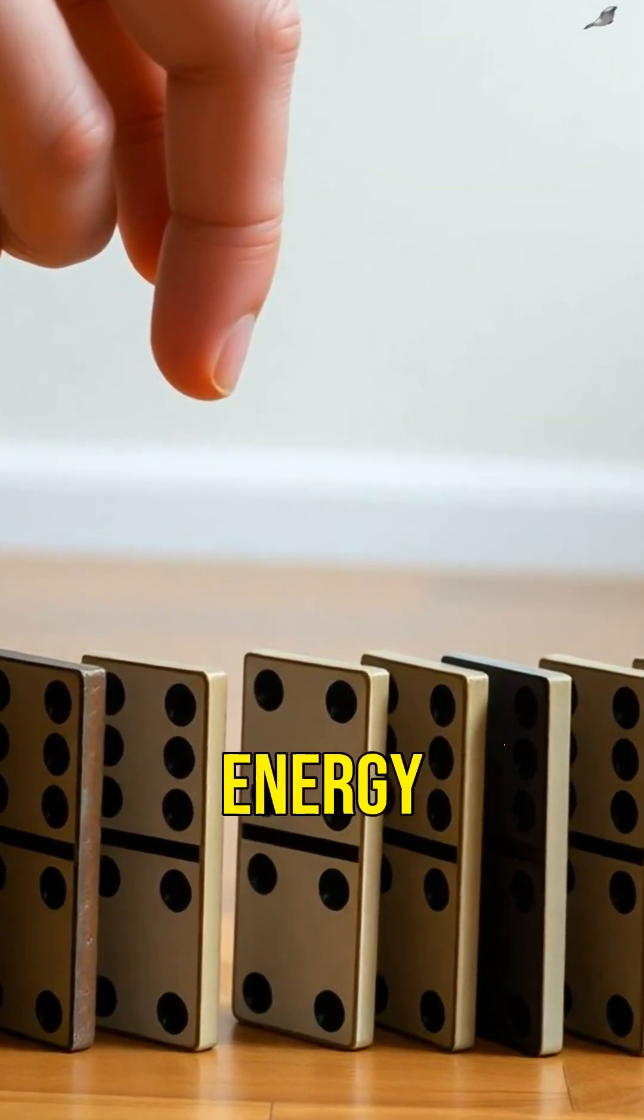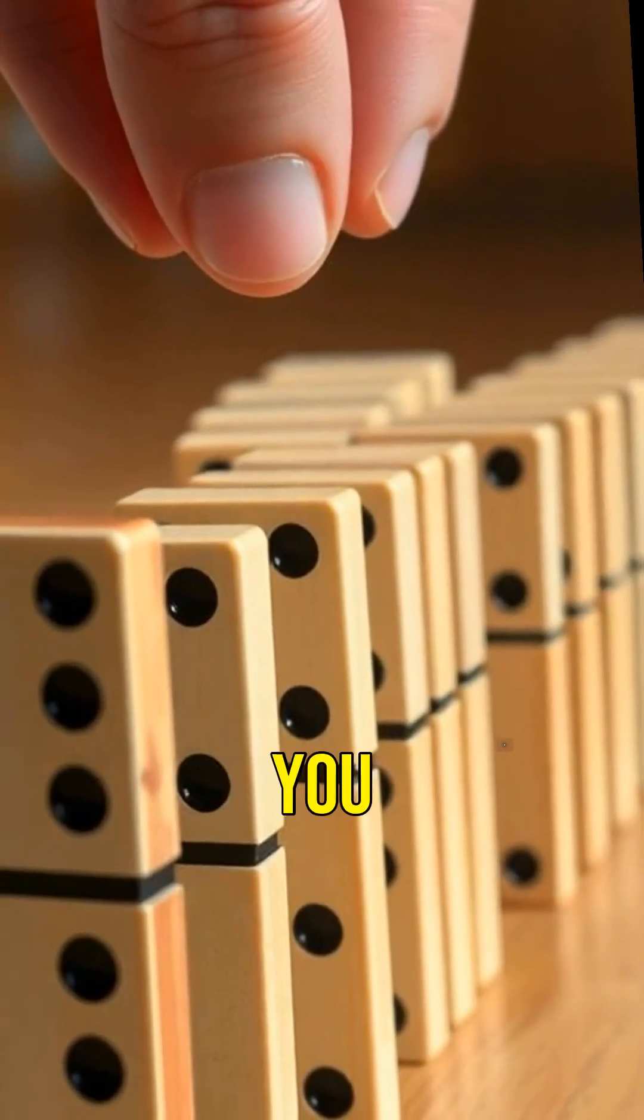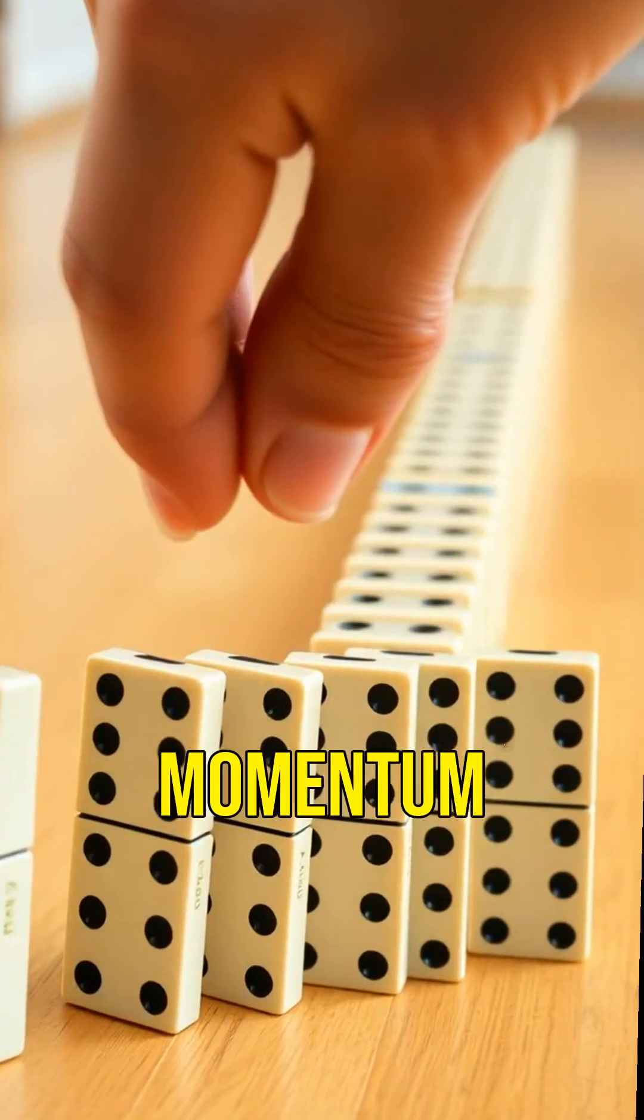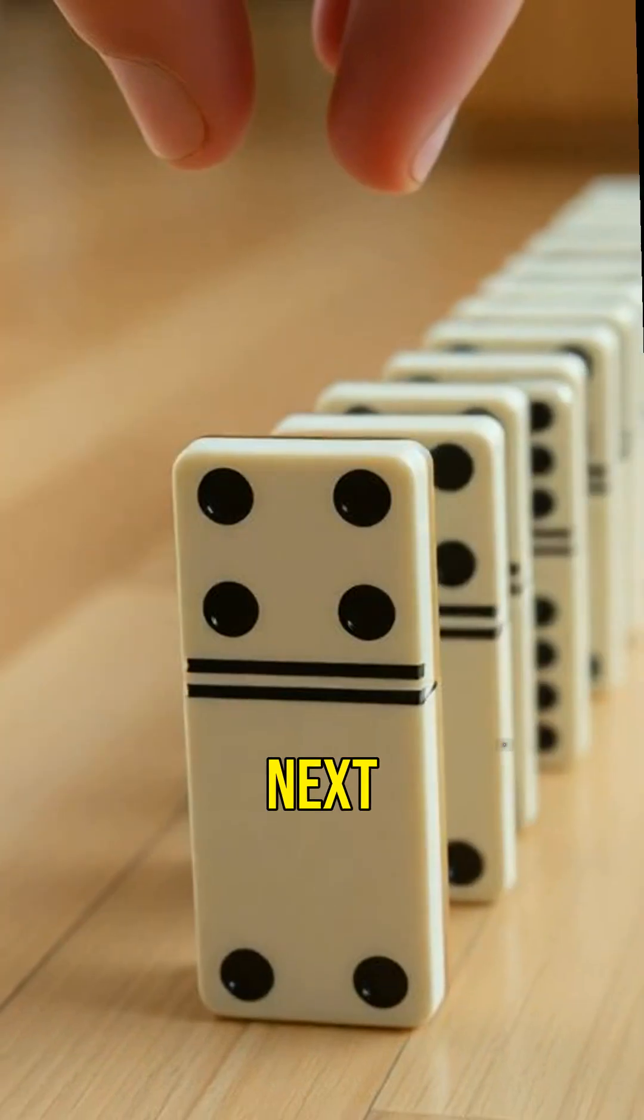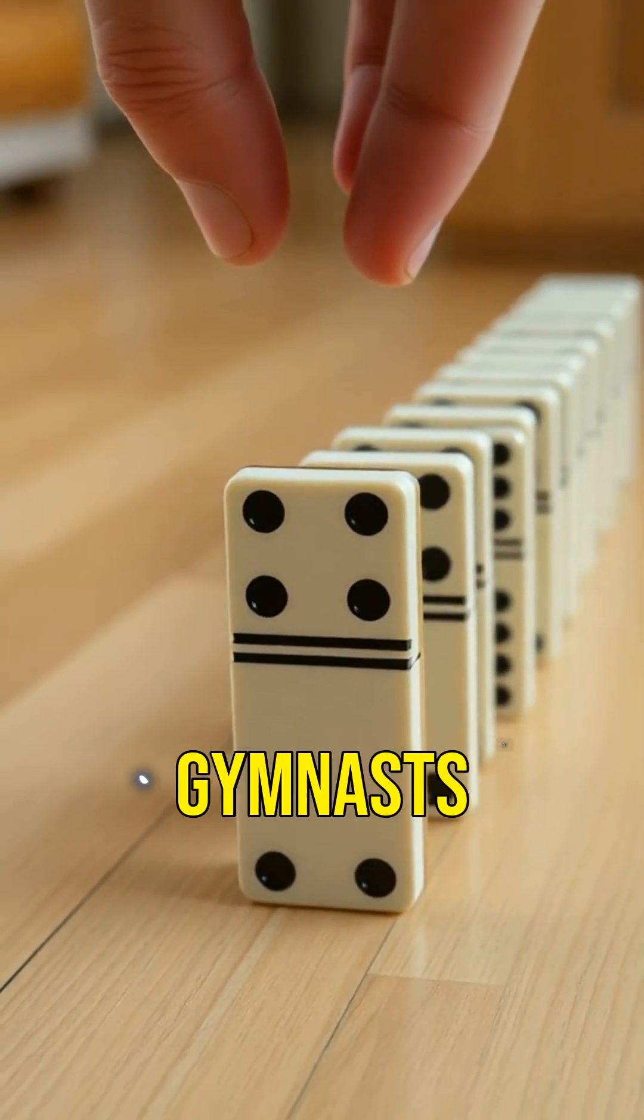Each domino stores potential energy when standing. The moment you tip the first one, gravity and momentum take over, transferring energy to the next piece like a row of tiny obedient gymnasts.